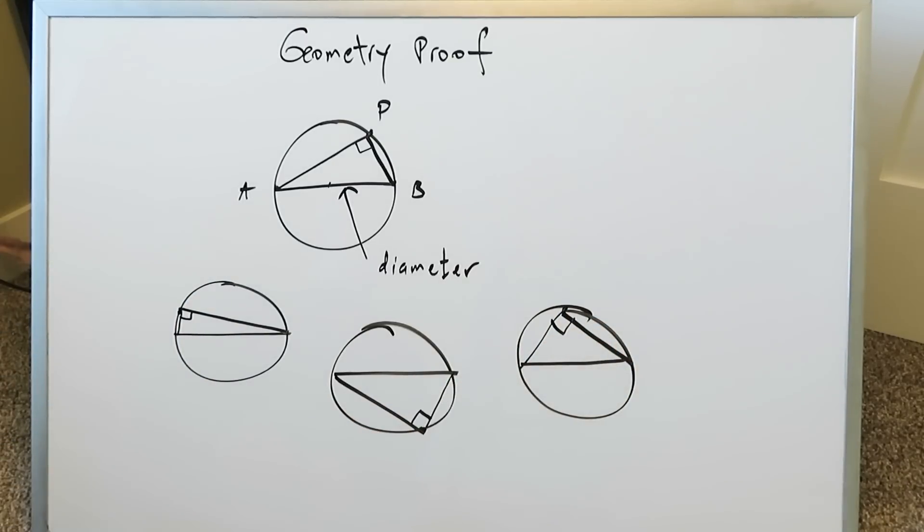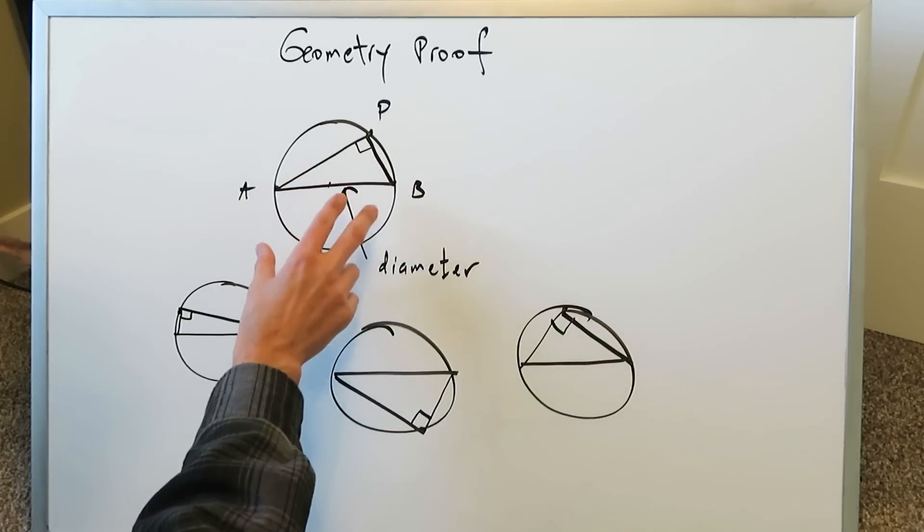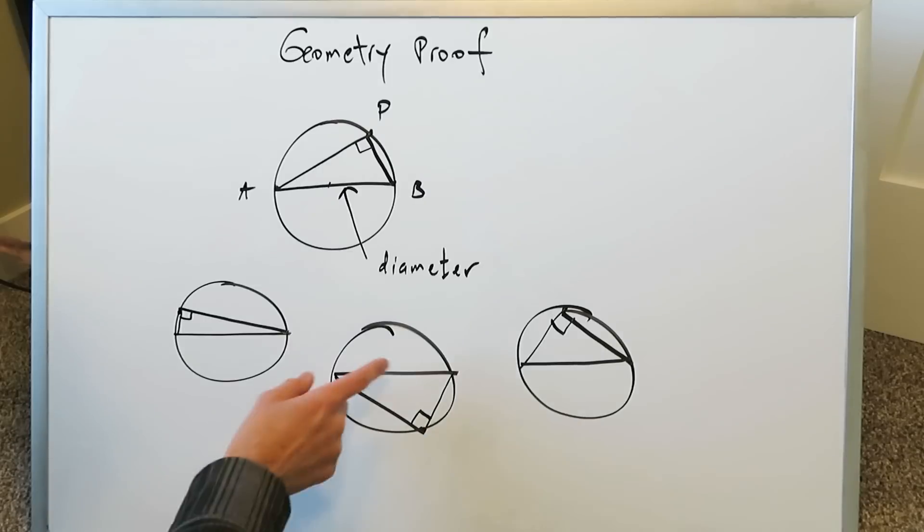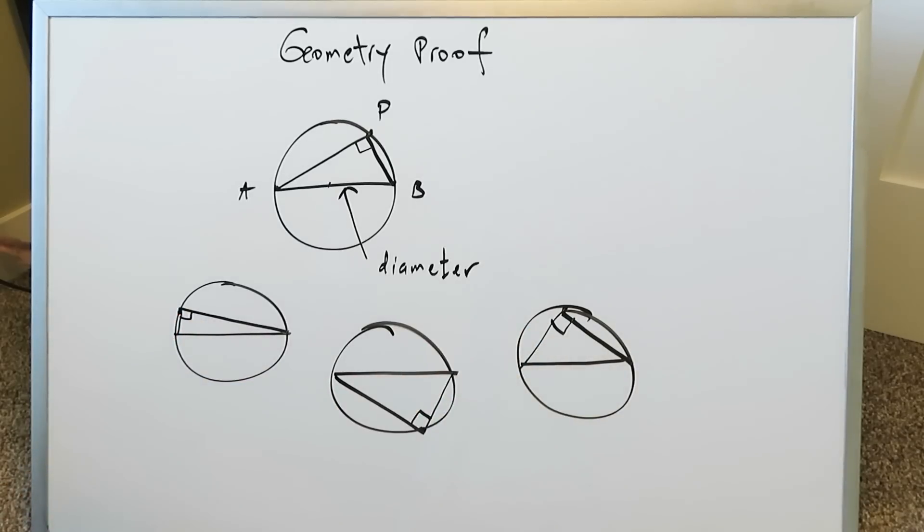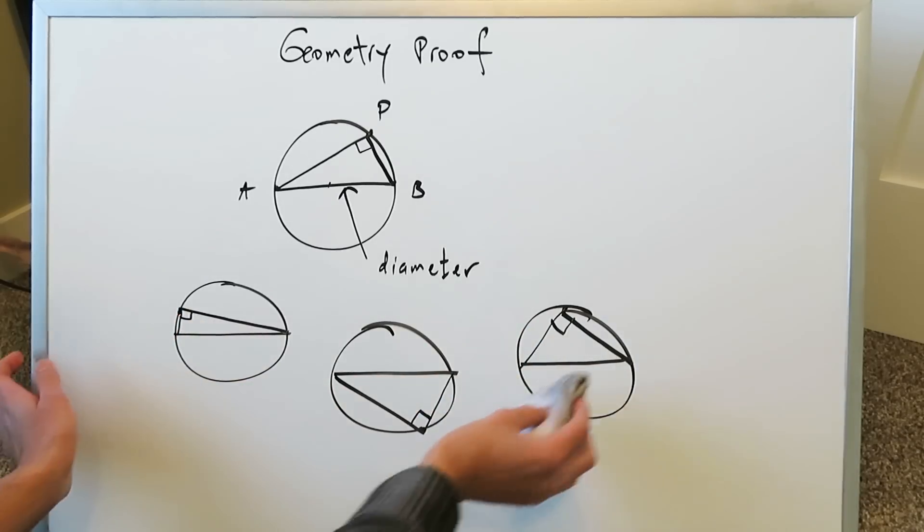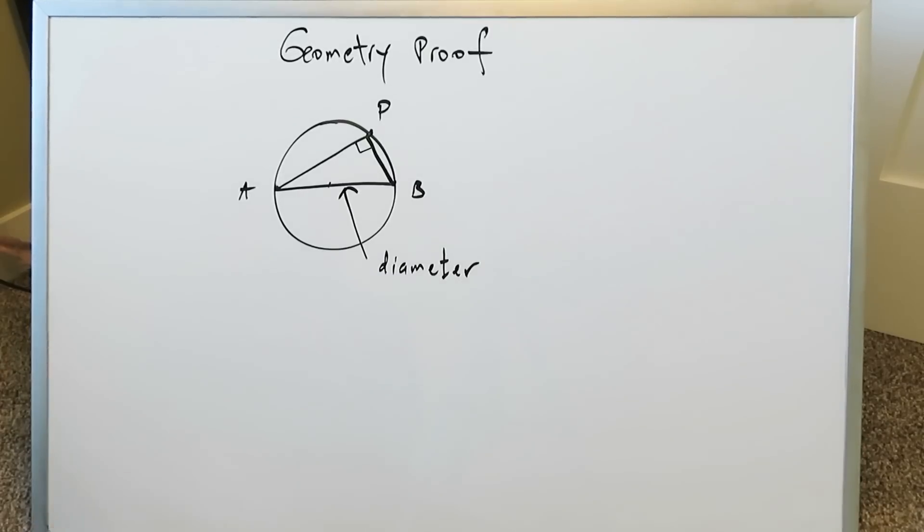We have to prove why is that the case—that that triangle always forms such. We know that a triangle will form because you're connecting three points. We're trying to show why is this connected point, this vertex, always 90 degrees. Let's look at it in this particular video. Remember there's more than one way of doing it. I'm only showing you a single way.